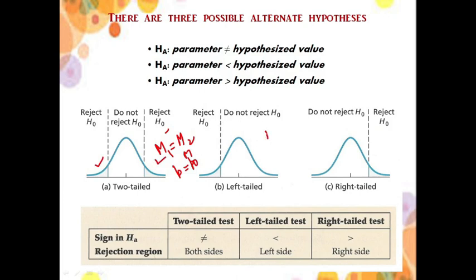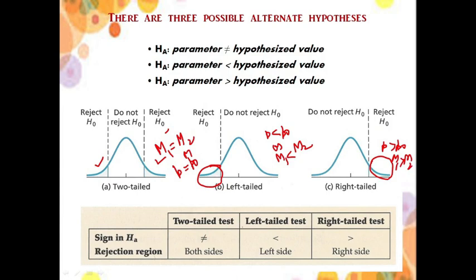In the case of left-tailed test, where p is less than p0, or m1 is less than m2, the tail is on the left side — a one-sided left-tailed test. In the third case, when p is greater than p0 or m1 is greater than m2, the tail is on the right side. For two-tailed test, if H0 uses equal-to, then HA uses not-equal-to; for left-tailed, HA is less than H0; for right-tailed, HA is greater than H0.